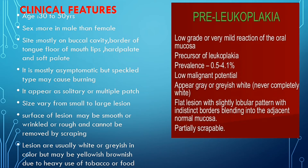It can also occur on the border of the tongue, floor of the mouth, lips, hard palate, and soft palate. It is mostly asymptomatic, but the speckled type may cause burning sensation. The appearance can be either solitary or multiple patches, and the size varies from small to large. The surface of the lesion may be smooth, wrinkled, or rough, and it cannot be removed by scraping.